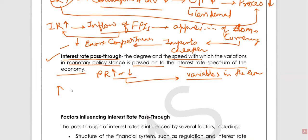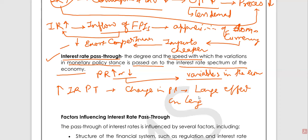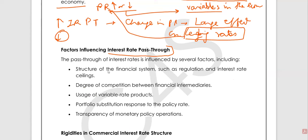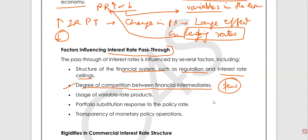If there is high interest rate pass-through, that would mean changes in policy rate would have a large effect on lending rates. And if it is low, that means our lending rates will take more time to adjust with changes in policy rates. Now we will be discussing the factors influencing interest rate pass-through. The factors are: structure of the financial system, and the degree of competition between financial intermediaries — if few banks are there then competition is less, as opposed to if the economy has more competition, meaning more interest rate pass-through can be seen.